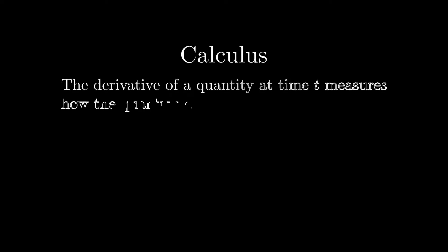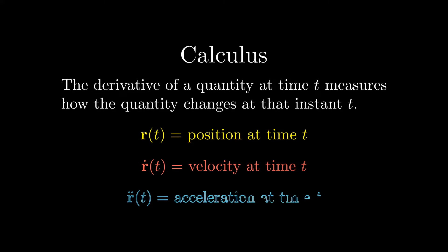From calculus, the derivative is the rate of change with respect to time. The position of the planet at time t is a vector we'll call r(t). Then the planet's velocity is the vector r dot, that's the derivative of the planet's position vector. And the planet's acceleration is the vector r double dot.